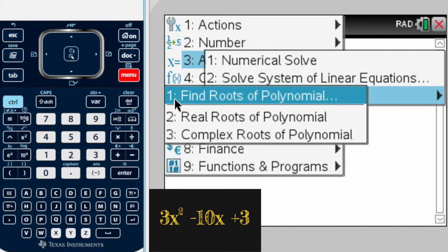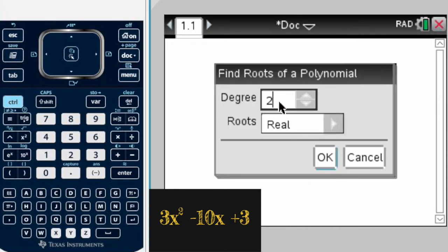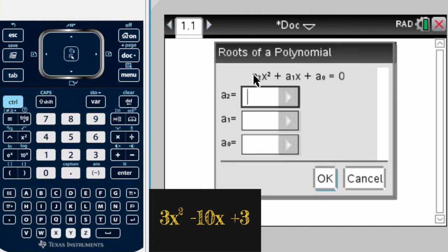Now degree, the example that we have has an x to the second power so it's a second degree. In roots we always, at least in algebra 1, want to find real roots. I'm going to put OK. This is telling you the formula which your trinomial has to be equal to 0. a₂ represents the coefficient of x squared, a₁ the coefficient of x, and a₀ is the number or the constant alone.